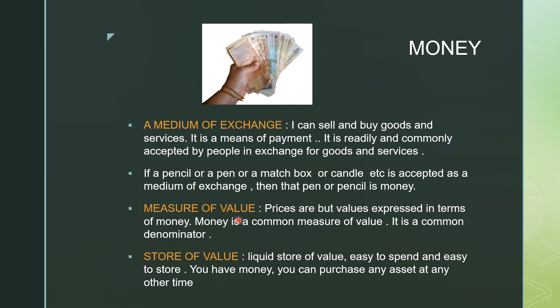Further, money is a measure of value. Price is the value expressed in terms of money. Money has this primary concept that it can measure everything — you can denominate any particular item in terms of money. Be it curtains, be it furniture, everything has a value in terms of money. So money is the common denominator; it is a measure of value.